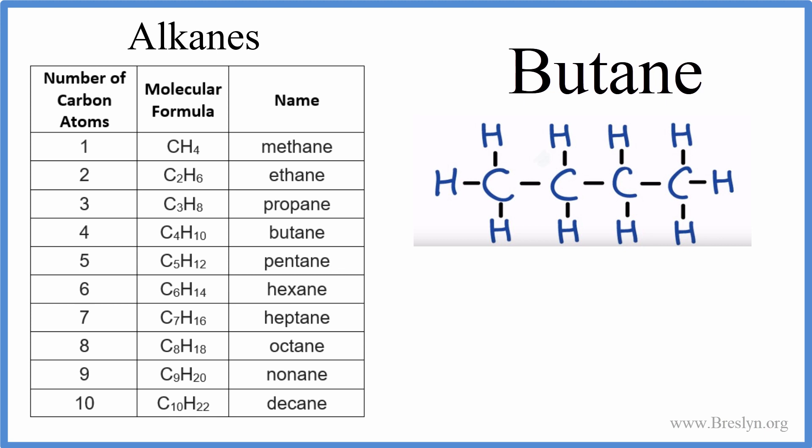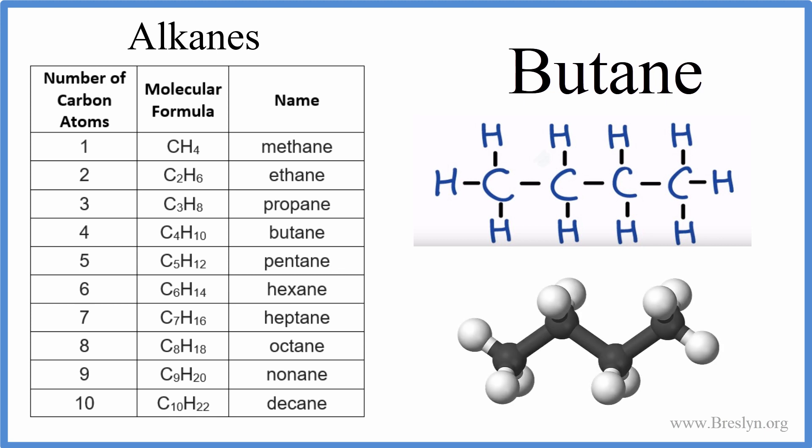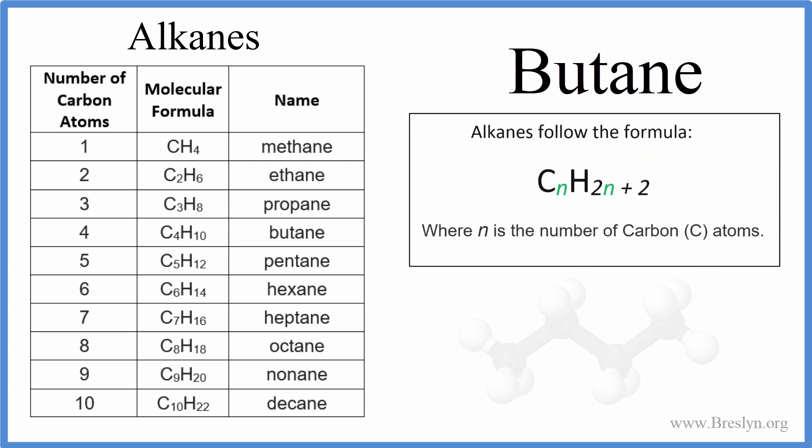If we looked at it in three dimensions, though, we'd see that it's not really a straight line. Each carbon atom — shown here in black — is surrounded by hydrogens with single bonds, and each carbon atom has a tetrahedral molecular geometry with respect to the atoms around it.